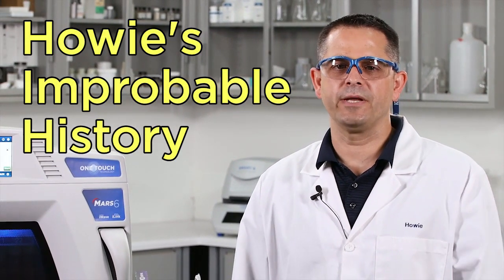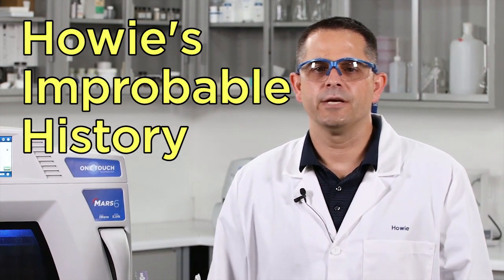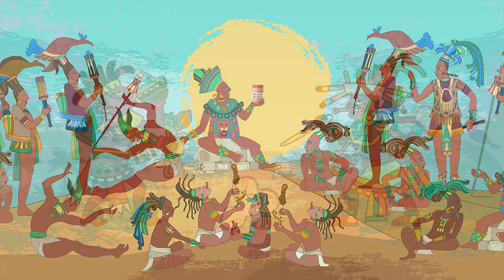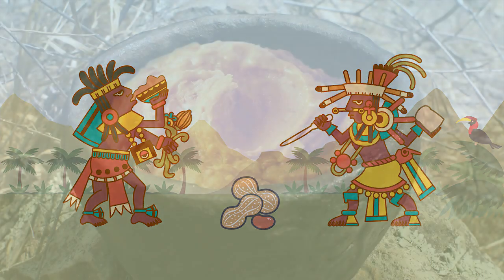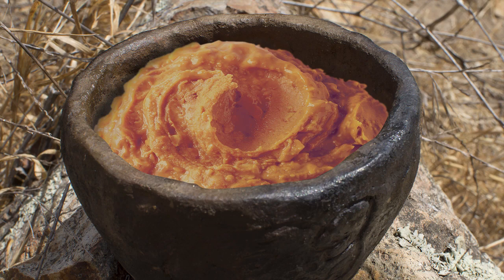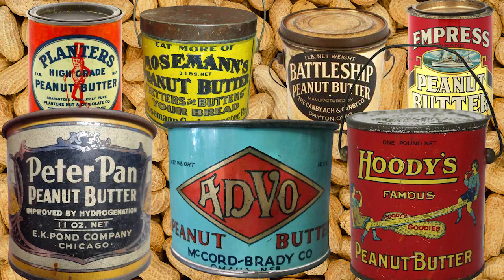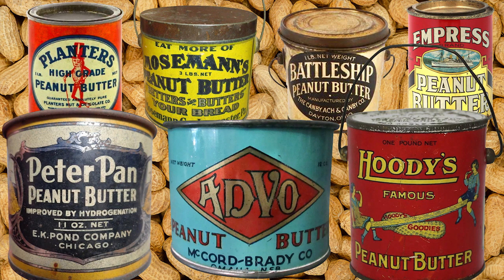Peanuts were first cultivated in South America about 3,000 years ago. Both the Incas and Aztecs made a form of peanut butter that was essentially a ground-up peanut paste, much different from what we have today. Marcellus Edson of Montreal, Canada patented a more modern peanut paste from roasted peanuts in 1884. In 1895, Dr. John Harvey Kellogg of cereal fame patented the process of using raw peanuts to make peanut butter.